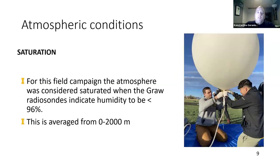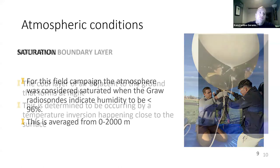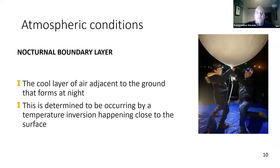Next we're looking at saturation. For this campaign we're considering the atmosphere to be saturated if our radiosondes indicate a relative humidity of 96 percent. That's because there's a resolution of one percent with the radiosondes and a three percent error. Anything greater than 96 percent we're considering saturated, and this is averaged over the first 2000 meters. We're looking for if there's a nocturnal boundary layer present. This is a cool layer of air adjacent to the ground that forms at night. We're looking for a temperature inversion up to 200 meters, so if it's getting warmer the higher it goes then we determine a nocturnal boundary layer is present.